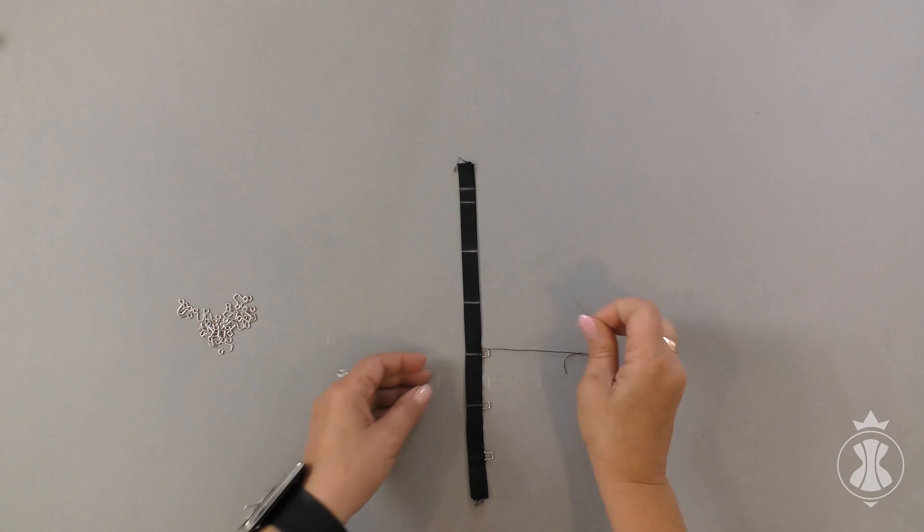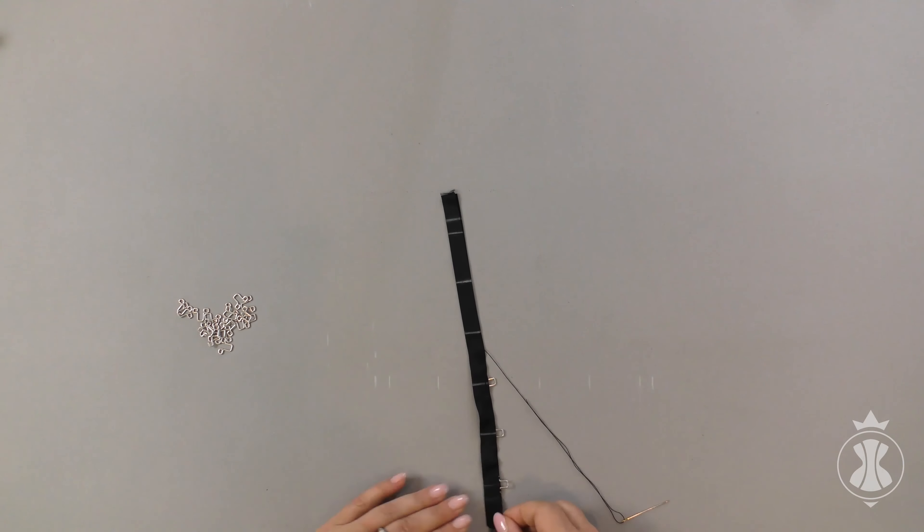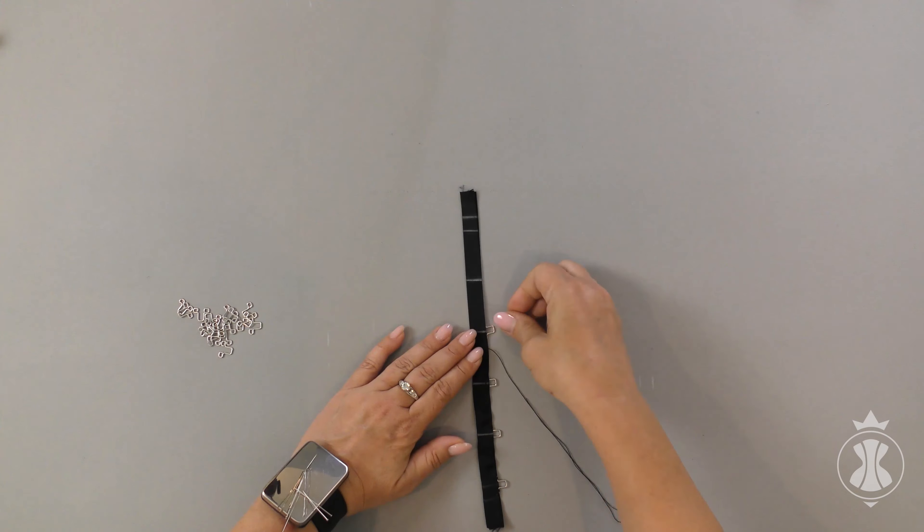Now I repeat this operation again. I get to the next marking with hand stitches, place a new loop, insert two pins, and continue to work.